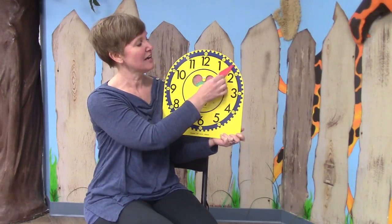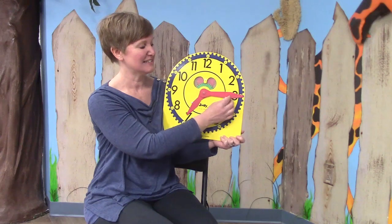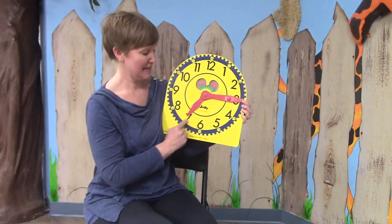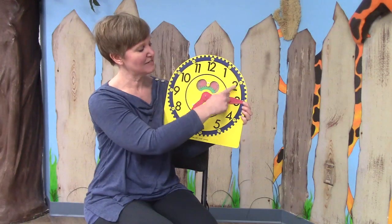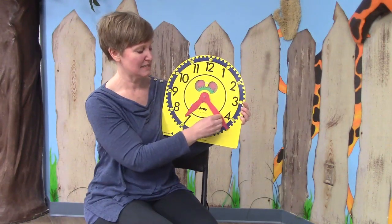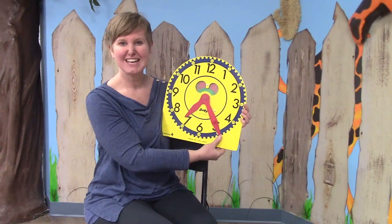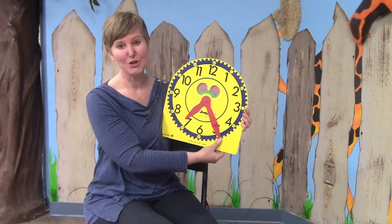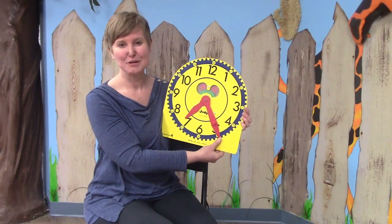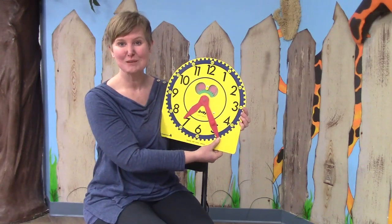5, 10, 15. It is now 7:15 on our clock. 5, 10, 15, 20, 25. It is now 7:25 on our clock. I would like for you to practice counting by fives and counting time today.